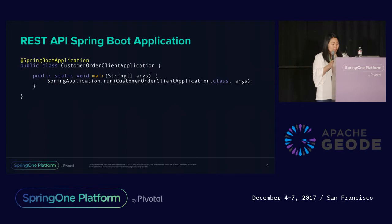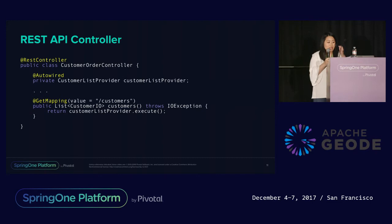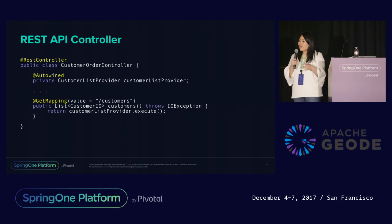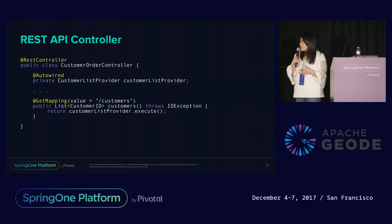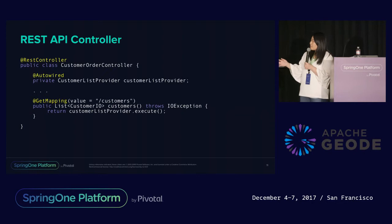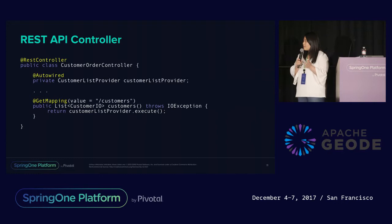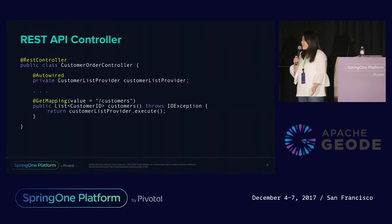This is the client REST controller. Spring's approach to building RESTful web services is to have a controller responsible for all HTTP requests. The @RestController annotation marks a class as a controller class. In this example, we have one method — customers — it's a GET for customers, and it calls customerListProvider.execute. That customerListProvider is the Apache Geode function for the client.